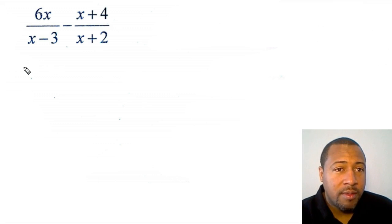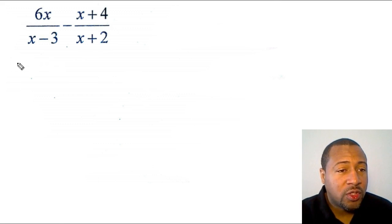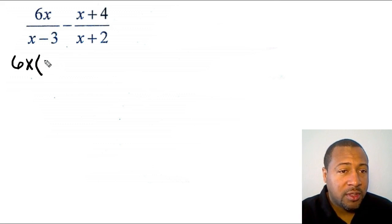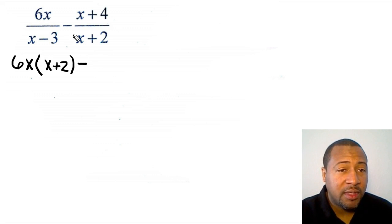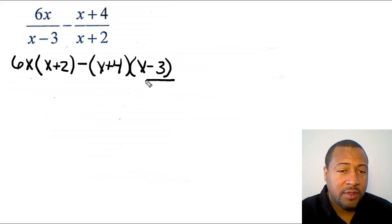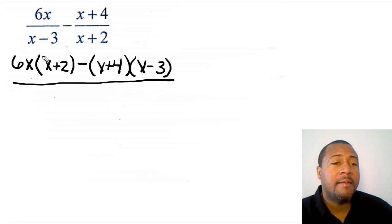Now we're going to multiply 6x times (x + 2). I'm going to write our 6x down here — there's a lot of work to do with this problem. So 6x times (x + 2), and then I cross multiply (x + 4). Remember, when I'm cross multiplying I have to put my negative in between, so I would have (x + 4) multiplied by (x − 3).